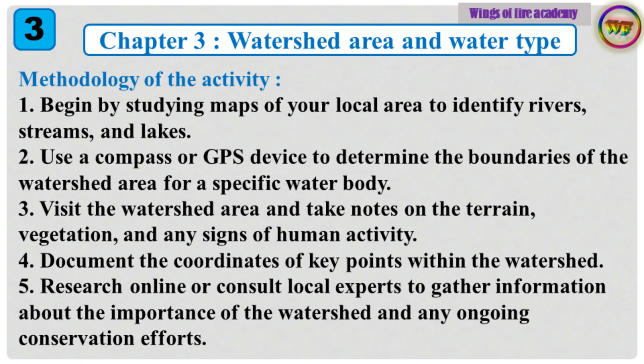Methodology of the activity: 1. Begin by studying maps of your local area to identify rivers, streams and lakes. 2. Use a compass or GPS device to determine the boundaries of the watershed area for a specific water body. 3. Visit the watershed area and take notes on the terrain, vegetation and any signs of human activity.